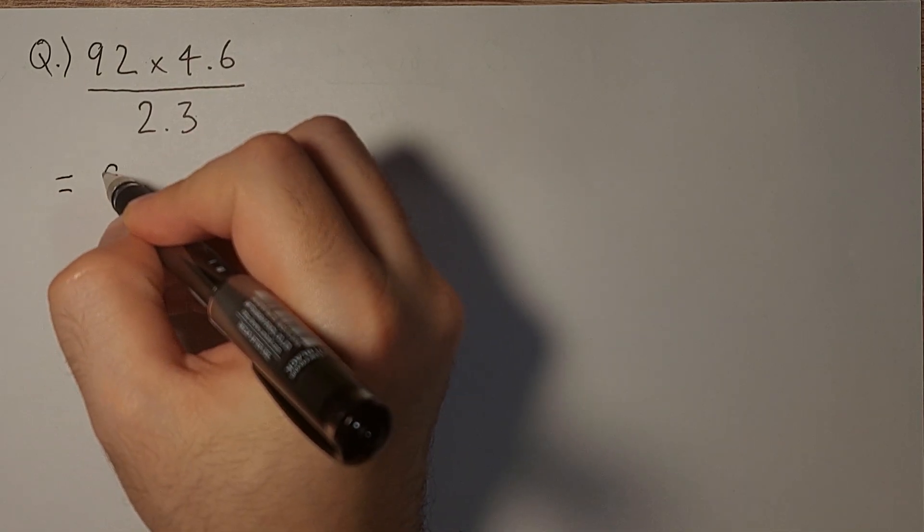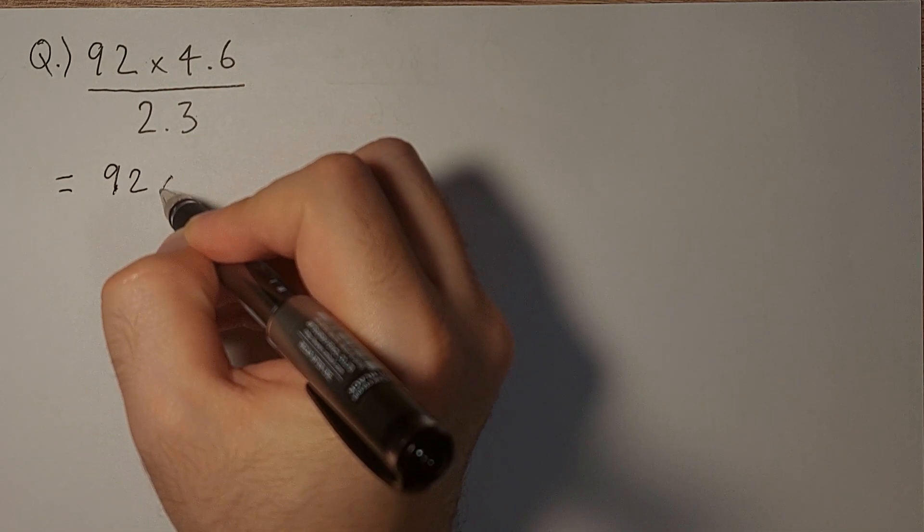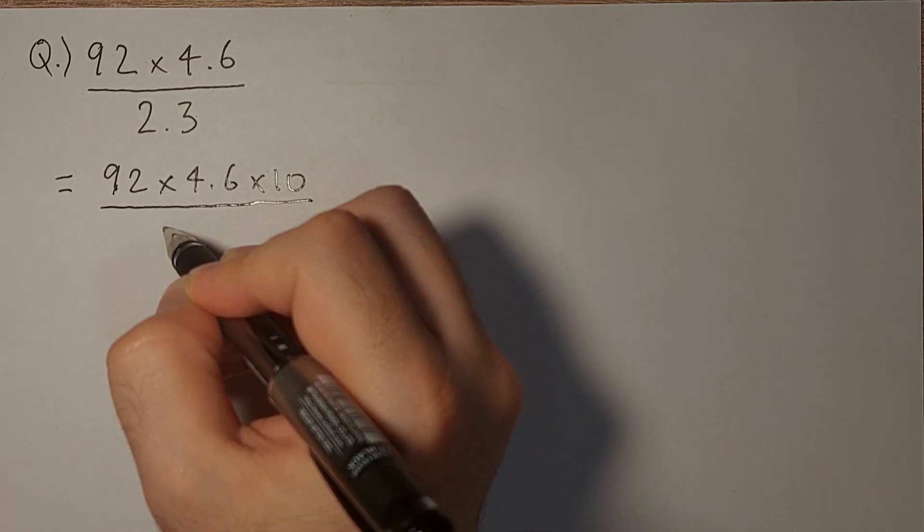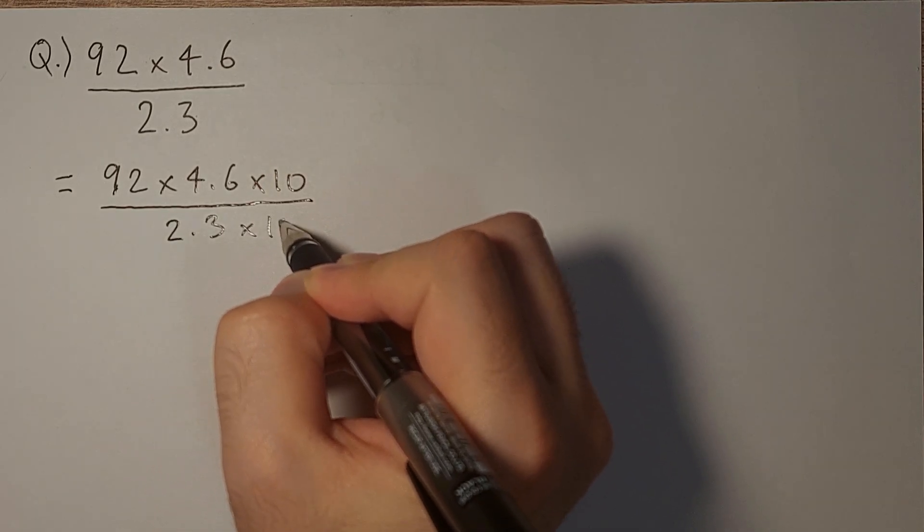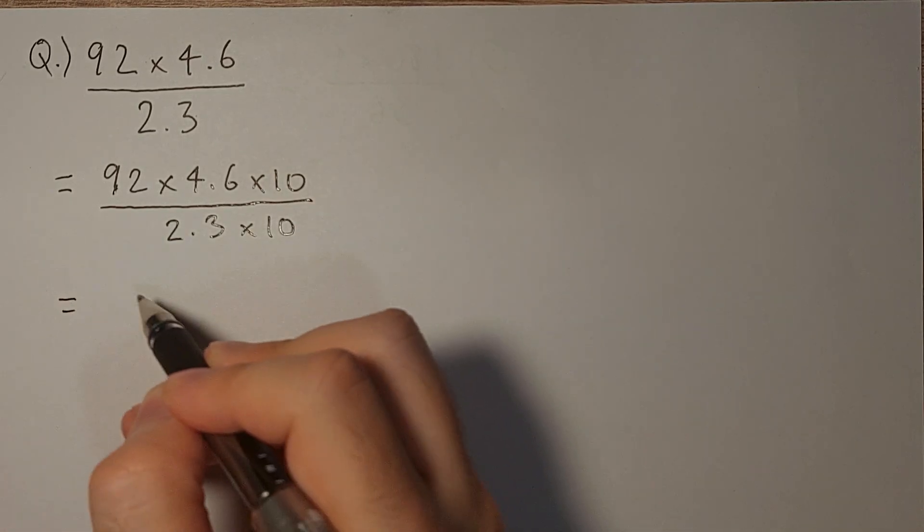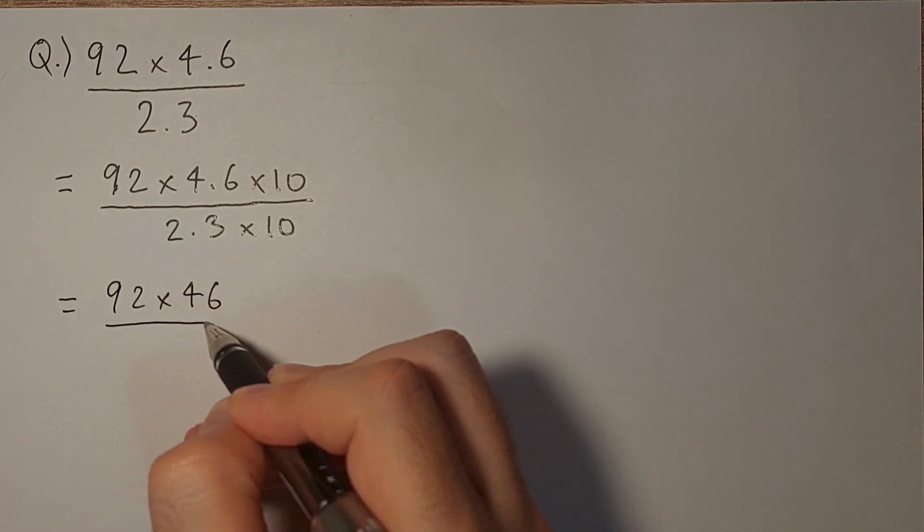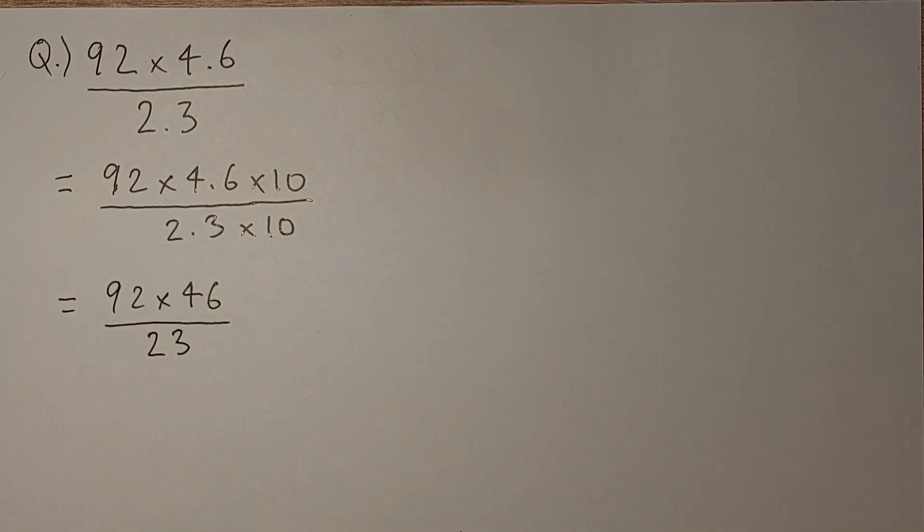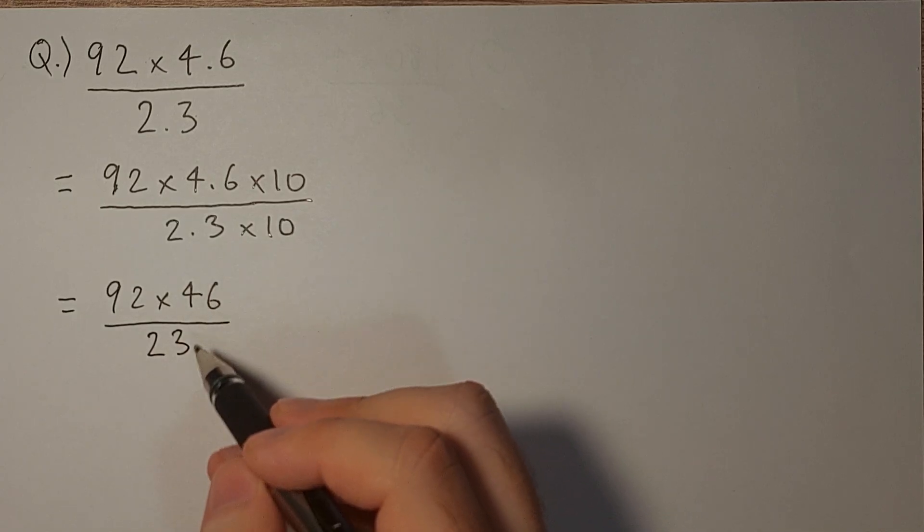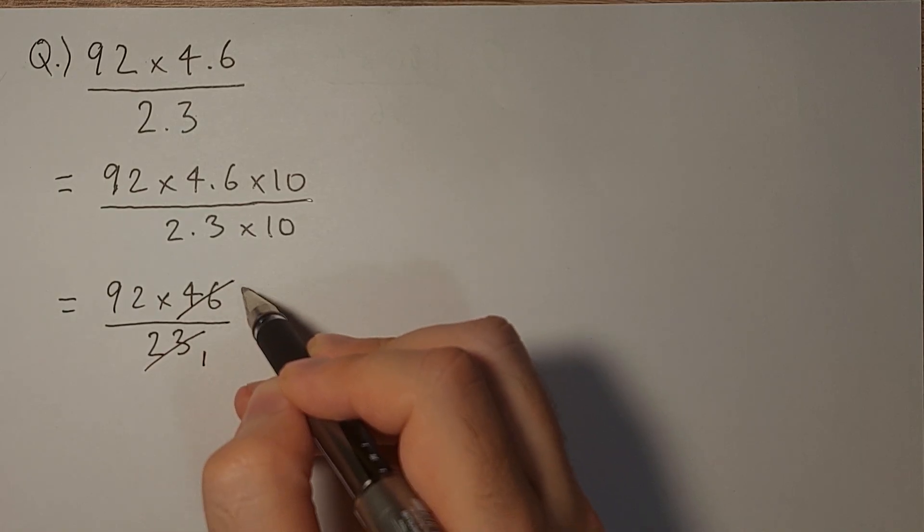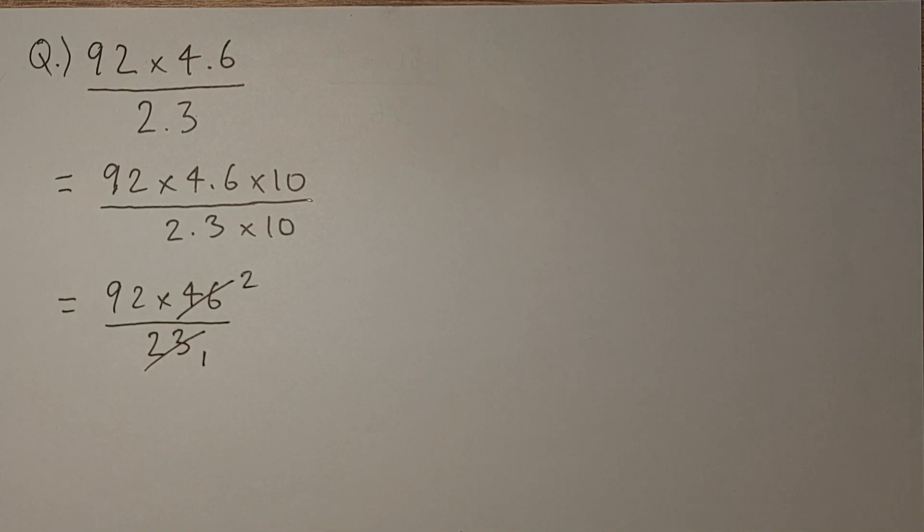To prove that, if I multiply the numerator and denominator by 10, we get 92 times 46 divided by 23, and as I said they can be simplified. 23 divided by 23 is 1 and 46 divided by 23 is 2.